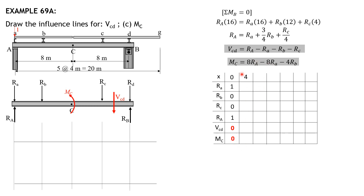When x equals 4, r sub small a is 0, r sub small b is 1, r sub small c is 0. R sub A from the equation: only r sub small b is 1, so three-fourths of 1 is three-fourths. Shear in panel CD: three-fourths minus 0 minus 1 minus 0 equals negative one-fourth. Then M sub C: 8 times three-fourths equals 6, minus 0, minus 4 times 1 equals 6 minus 4, so positive 2.